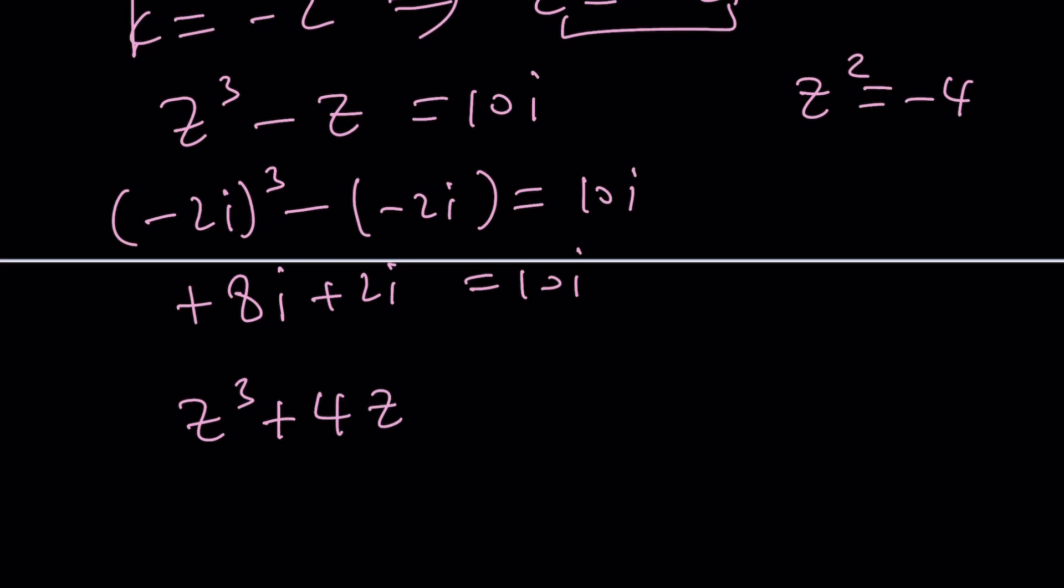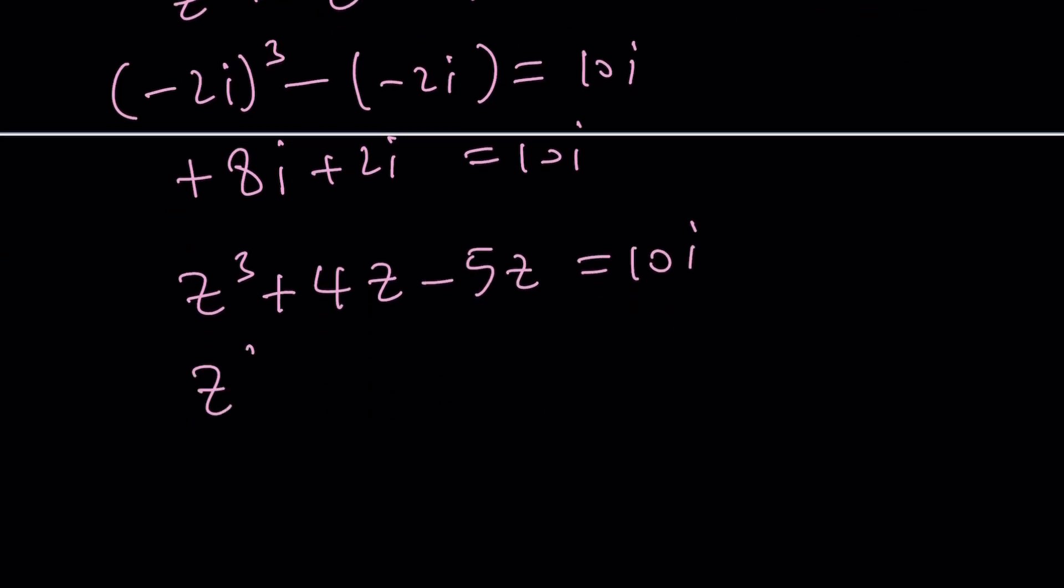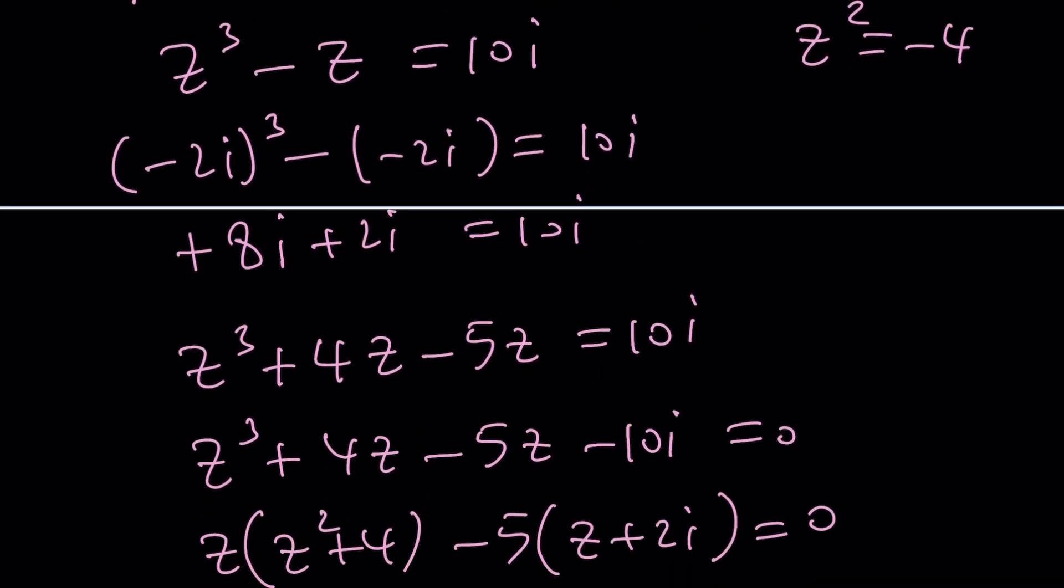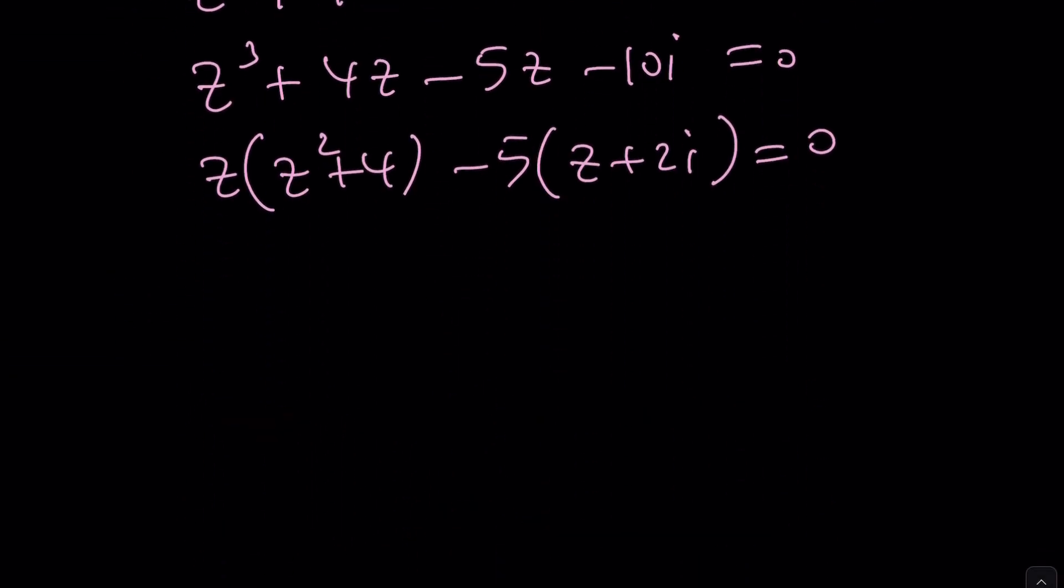z³ + 4z. That gives me z(z² + 4), right? Yeah. And then -5z = 10i. Okay, let's give it a try. I have a feeling this is going to work, but I'm not 100% sure. Try for the first time. And then z factor out (z² + 4) minus 5 factor out (z + 2i). Yay, I got z + 2i, which means -2i is going to be a solution for part of the equation and for this one too. Yes.